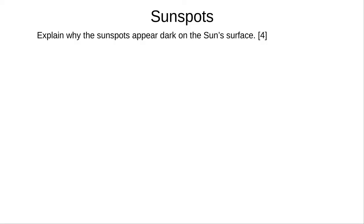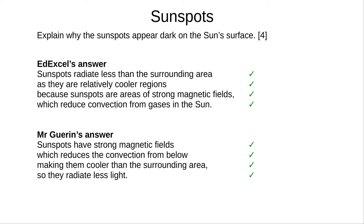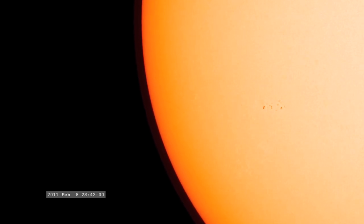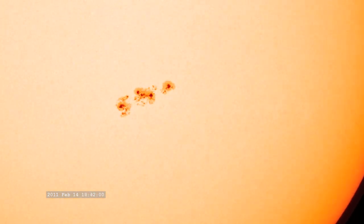You should now be able to answer this exam question. It's four marks, so you should make four clear points. Pause the video and give it a go. Here is the answer — the first is from the mark scheme, and the second is what I wrote. Sunspots only last a short time, a few days or weeks typically. In that time, they change shape, move across the surface of the Sun, and may merge or interact with other nearby sunspots. Here, we can see a sunspot group form and move across the Sun over a period of two weeks.